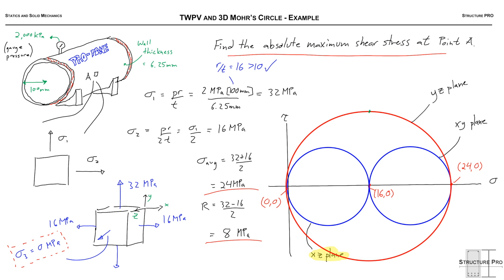There is a slight error in what I've drawn here, and if you catch it, put it in the comments and you'll get a special gold star. Now the blue circle to the left is the one for the XZ plane, so that's looking at the element from the top. We have a 16 MPa and a zero, those are principal stresses for that element.